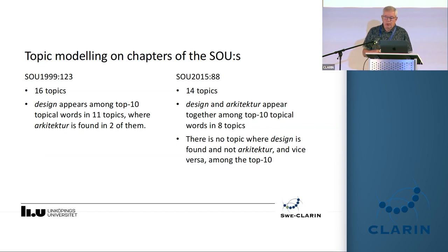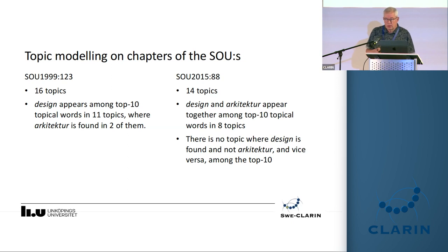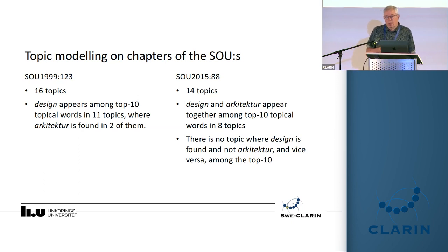Now we turn to the reports, where we tried topic modeling. There are only two reports, but we split them into chapters and performed topic modeling. In the earlier report, design would be more common — it appears in more topics, and architecture is only found in two of them. Looking at the ten most common words for each topic in the later report, on the other hand, they always appear together: out of fourteen topics, they are among the top ten in eight of them, and they always appear together, never on their own.